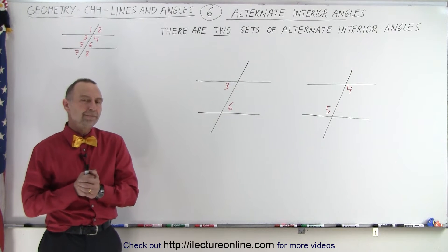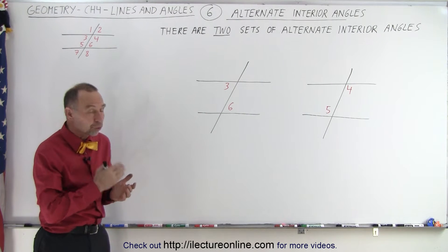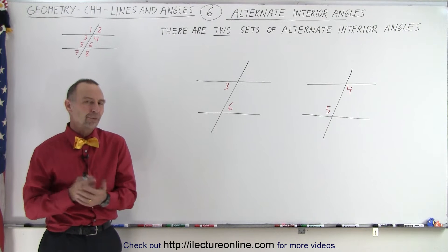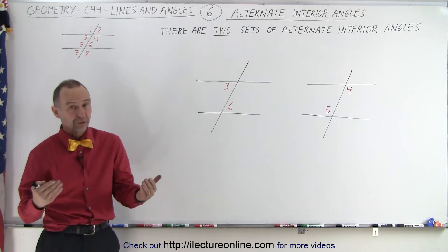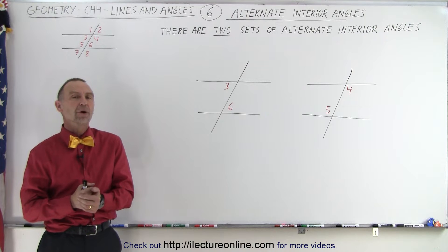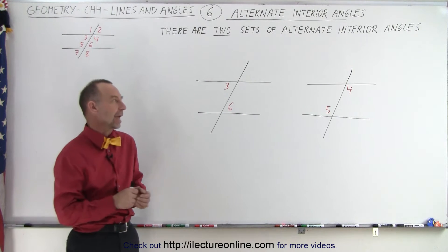Welcome to iLecture Online. Probably the most useful angle pairs are formed by a transversal when the transversal cuts through two parallel lines, or what we call the alternate interior angles.